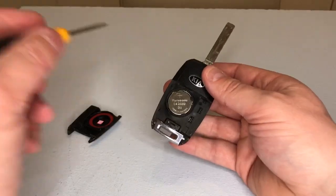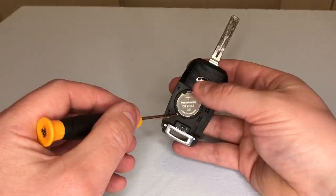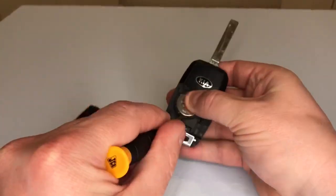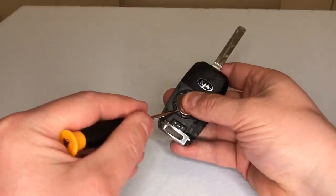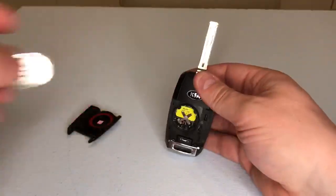Now we get a little screwdriver and place it underneath the key fob battery and prise it out of its housing like so.